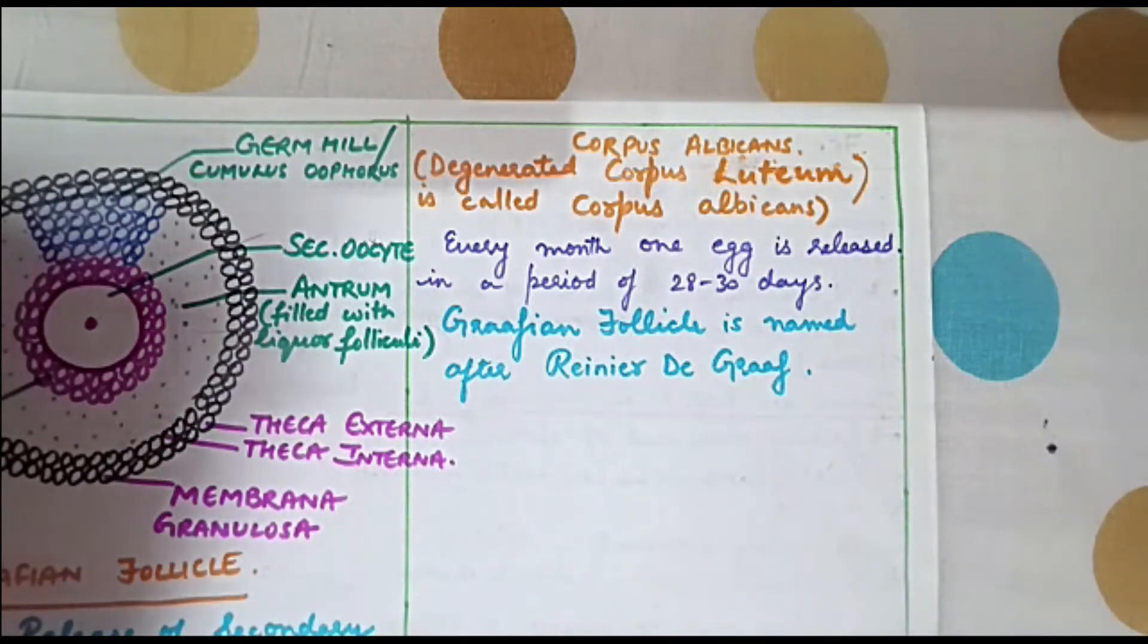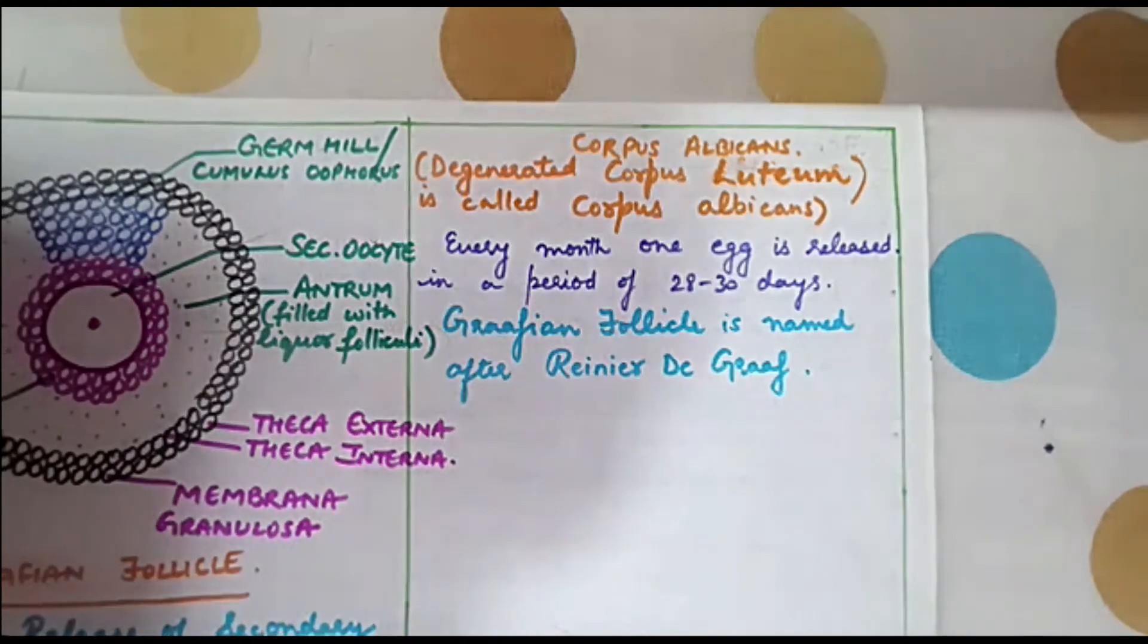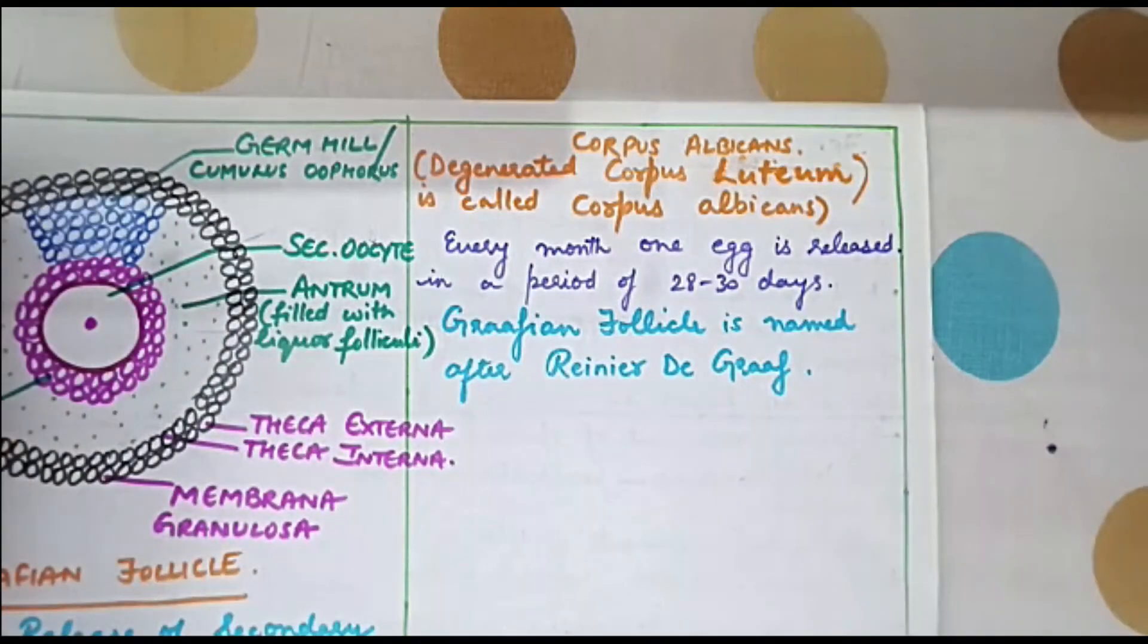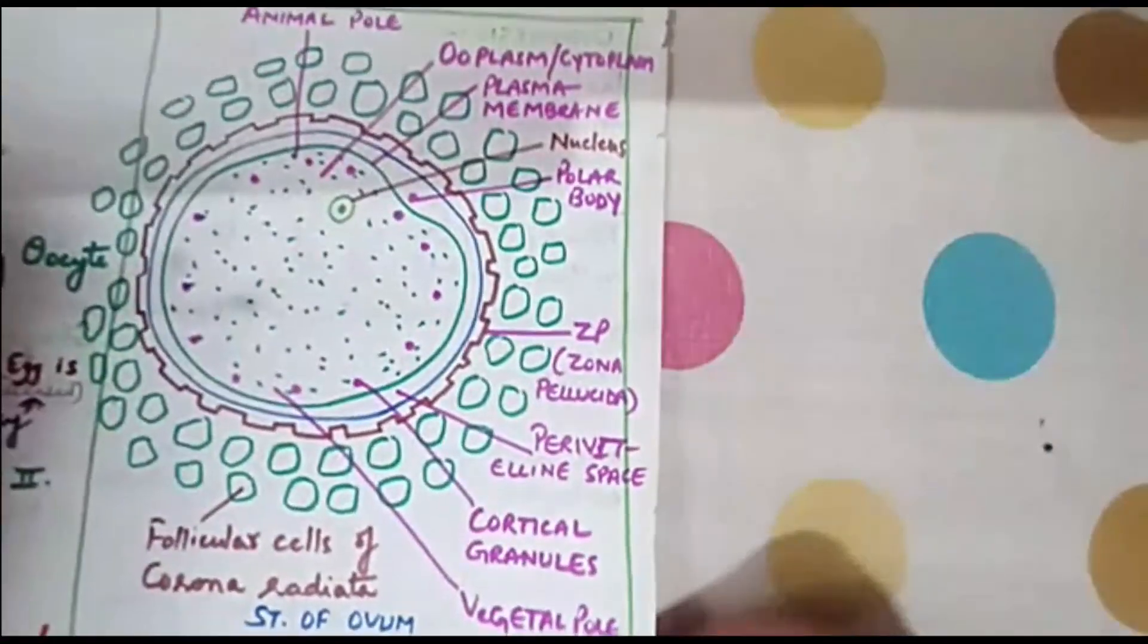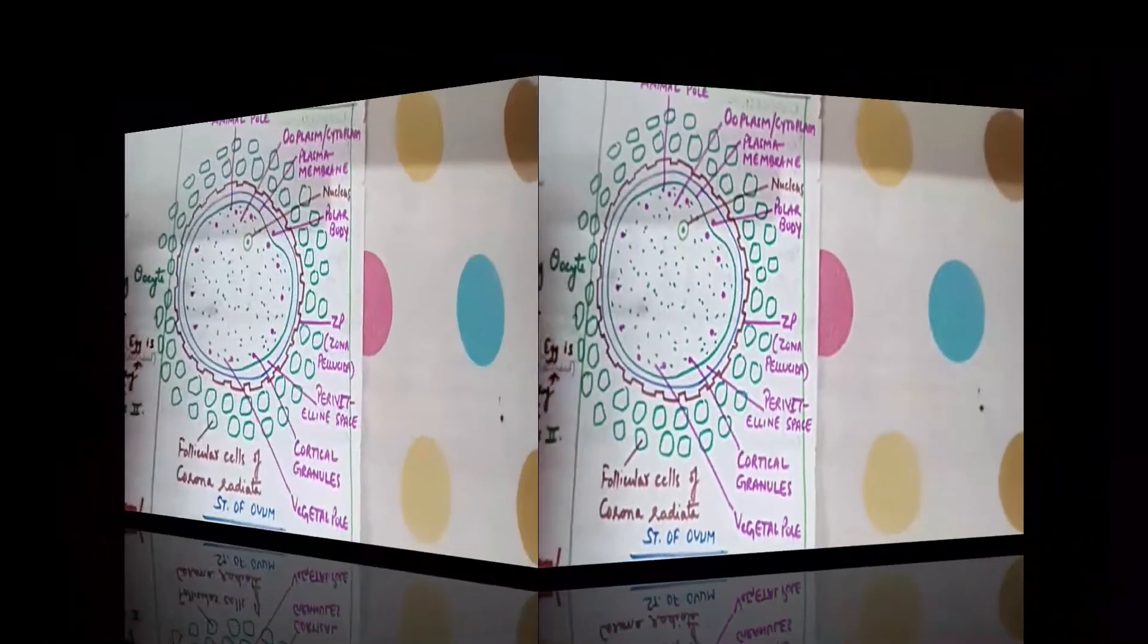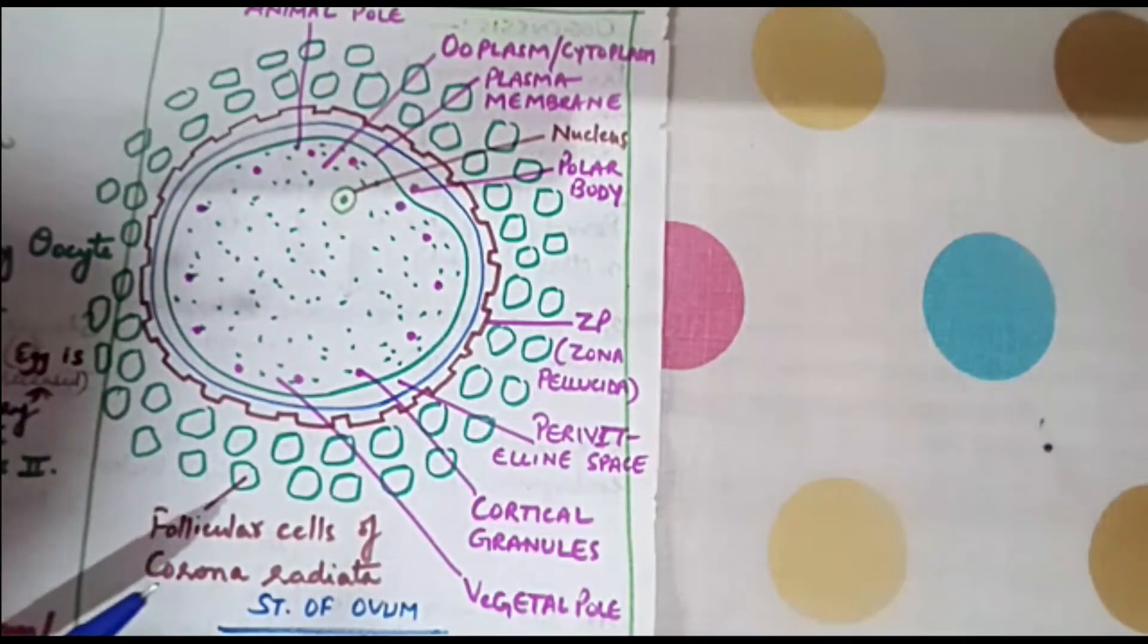After discussing the structure of Graafian follicle, we will move to the structure of ovum exactly. Structure of human ovum or egg.